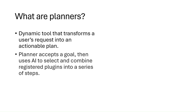Let's start by answering the question: what are planners? Planners are a dynamic tool that transforms our user requests into an actionable plan. They accept the request from the user — otherwise known as a goal the user wants to accomplish — and the planner uses AI to select and combine the plugins registered to the kernel in a series of steps. Behind the scenes, the planner will use a prompt to our large language model to generate the plan. The planner is given a set of rules to use when generating a plan, and these rules will contain a description of all the functions available to the large language model to create the plan.